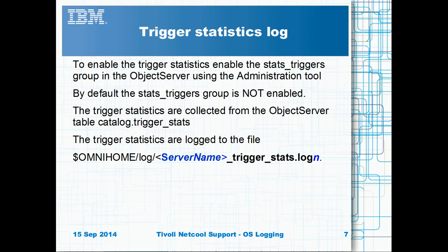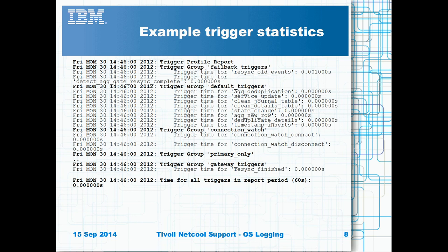The Trigger Statistics Logging is not enabled by default. It is best practice to enable the Trigger Statistics Logging by enabling the Stats_Trigger group. The Trigger Log shows each trigger's usage ordered by the trigger group as recorded within the IDUC period. The total time used by all of the triggers is given as a summary line, making it easier to spot unusual usage.